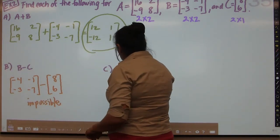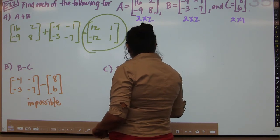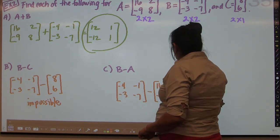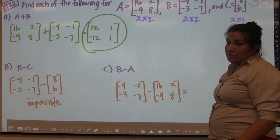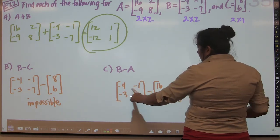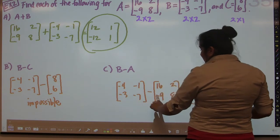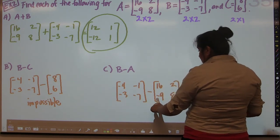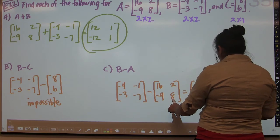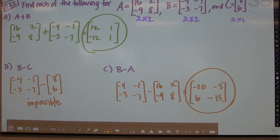For part C, we subtract B minus A. B is negative 4, negative 3, negative 1, negative 7, and A is 16, negative 9, 2, 8. Be very careful with negatives. Negative 4 minus 16 is negative 20. Negative 1 minus 2 is negative 3. Negative 3 minus negative 9 is the same as negative 3 plus 9, which is 6. Negative 7 minus 8 is negative 15. The answer is the matrix: negative 20, 6, negative 3, negative 15.